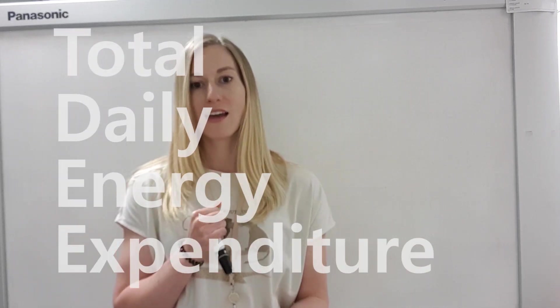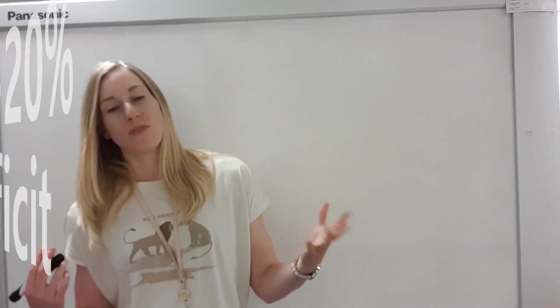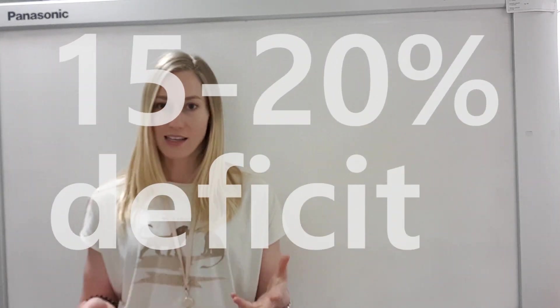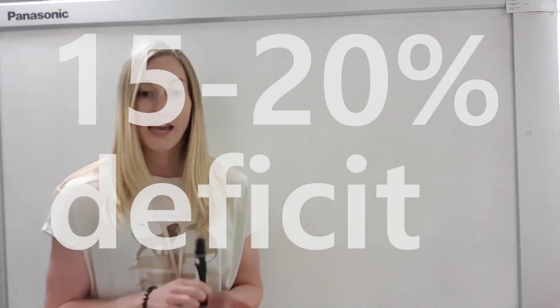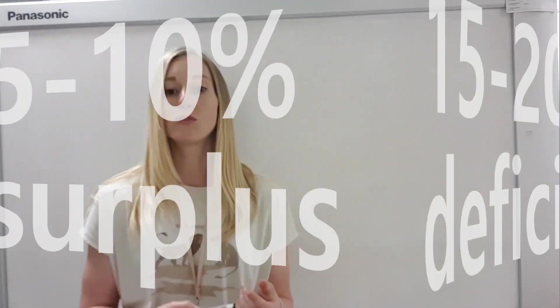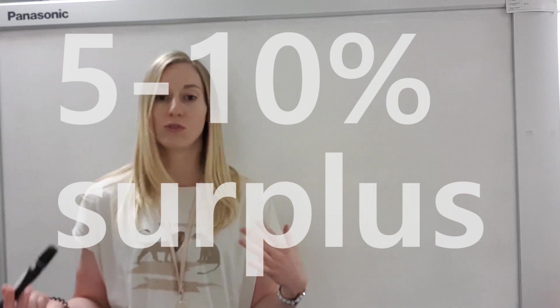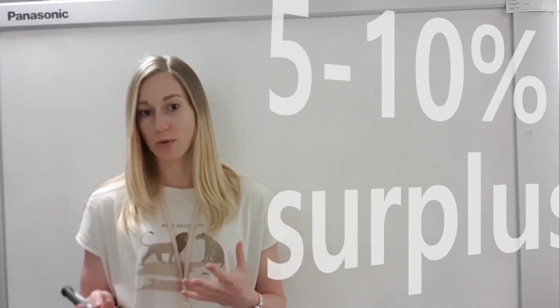So your total daily energy expenditure, which is your TDEE, is the most important bit of information you want to collect because when trying to figure out your numbers, this represents the total number of calories you burn throughout the day. To lose weight you'll need to consume about 15 to 20% less than your TDEE, and to gain weight or build muscles you will need to consume about 5 to 10% more, so surplus.